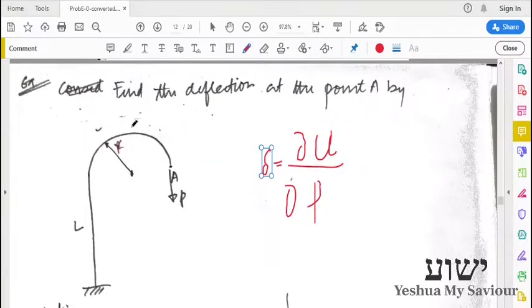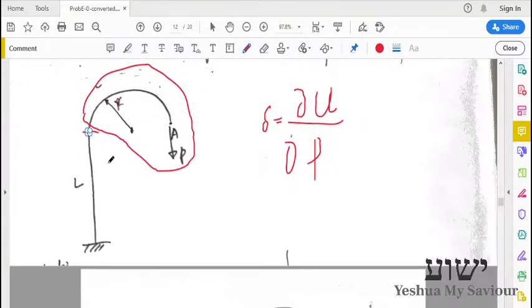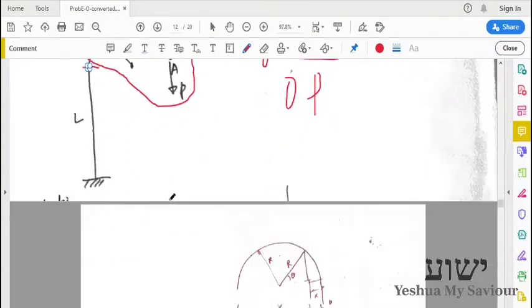The complexity involved in this problem is because of this arc. That's the only part that is complicating this problem. So first, we will consider this arc.